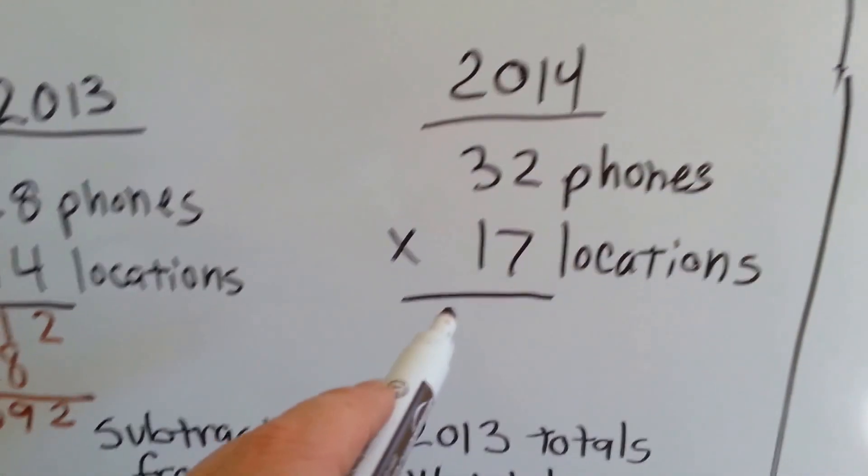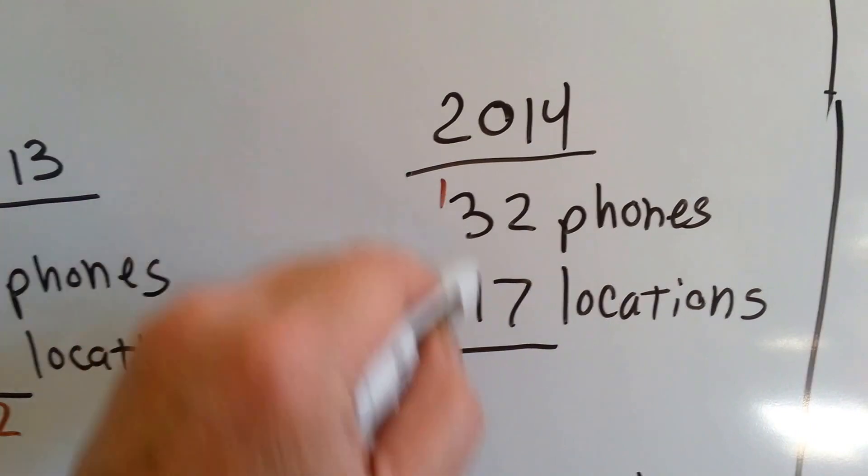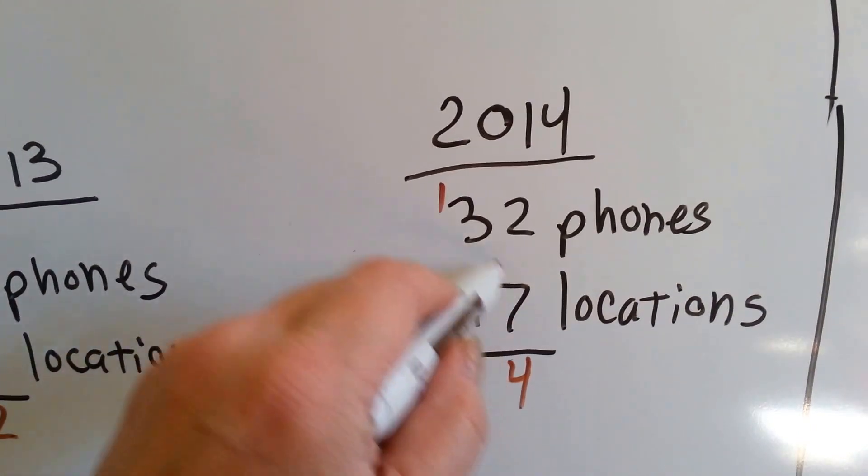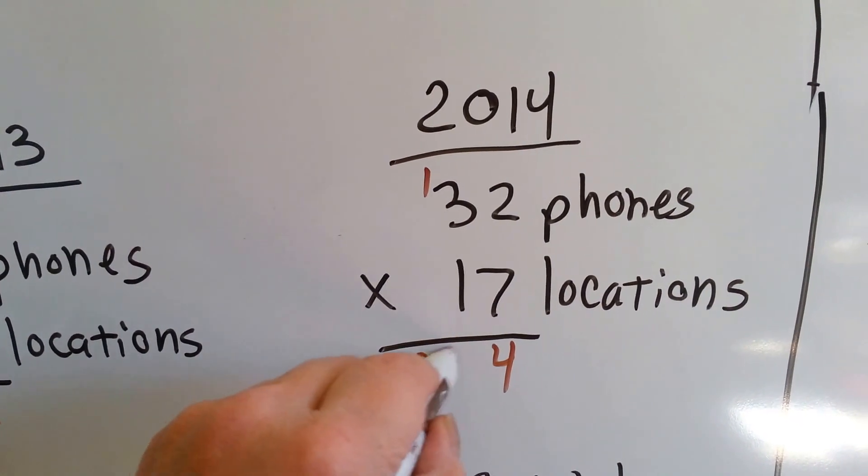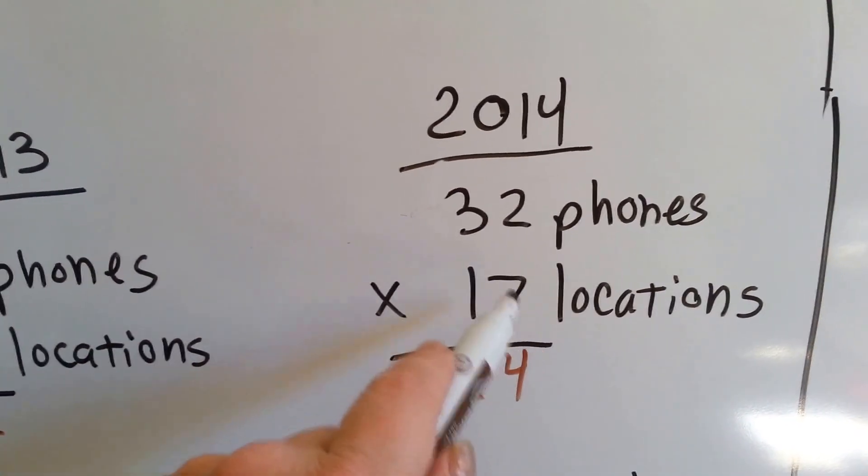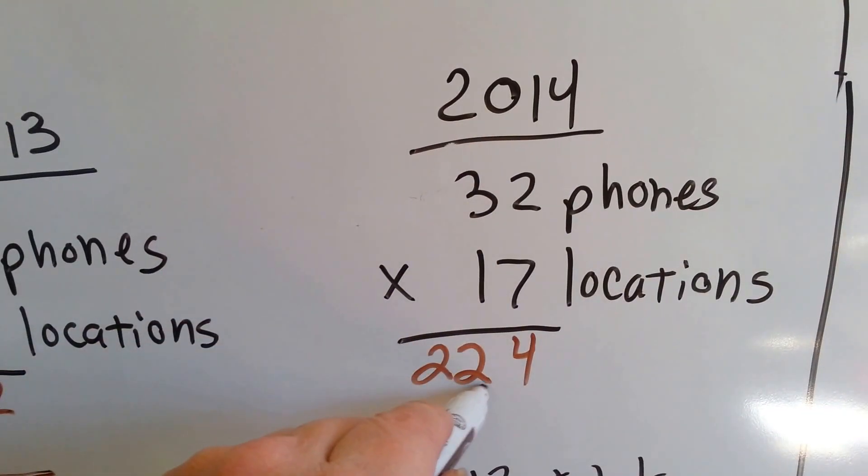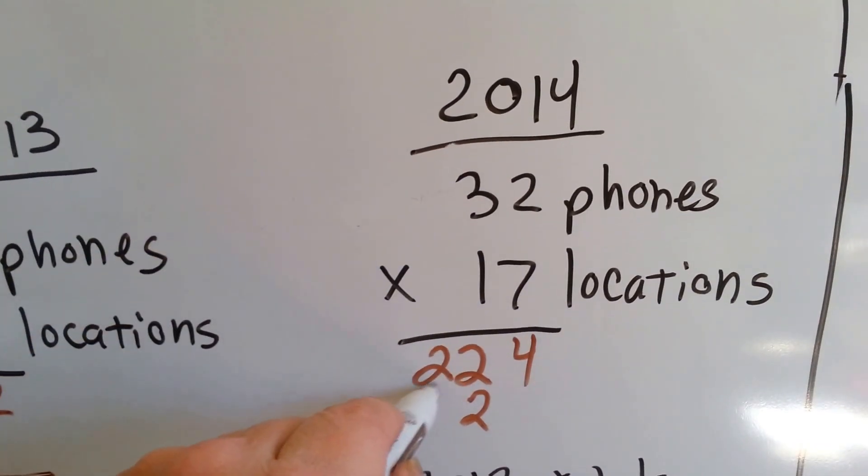Now let's find out how many she sold in 2014. 7 times 2 is 14. We carry the 1 and put the 4 down. 7 times 3 is 21, plus 1 more is 22. Now we have to get rid of this carryover because that was from the ones place. 1 times 2 is 2. It goes here in the tens place because we're multiplying tens. And 1 times 3 is 3.